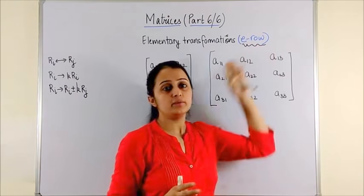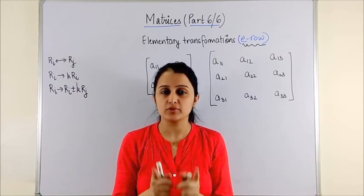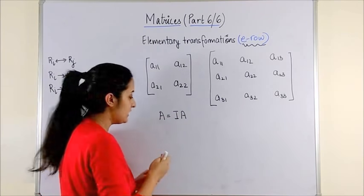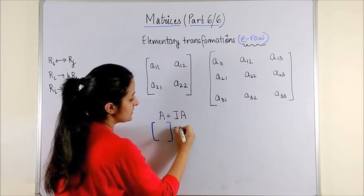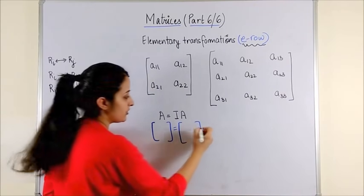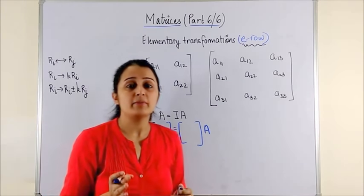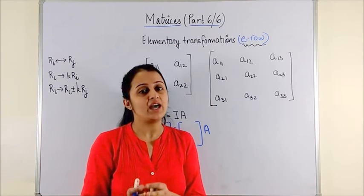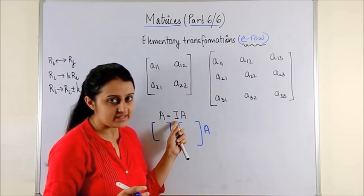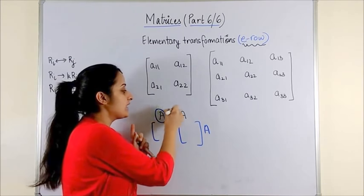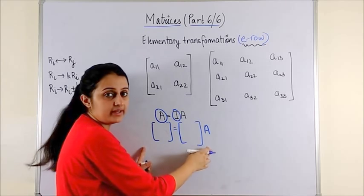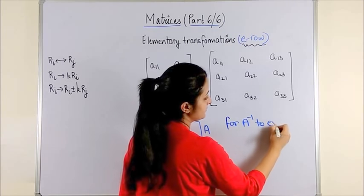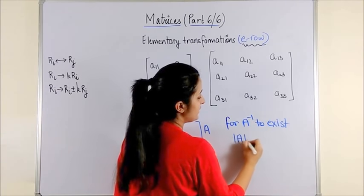Before we begin with elementary row transformations, we need to understand the procedure. First, we write our matrix A as I times A — we write the identity matrix corresponding to it, and A is written as it is. By the theorem, whatever row operations we apply will be valid only on the pre-factor I. So they apply to this A and this I. The first thing to check is that for A inverse to exist, the determinant of A should be non-zero.